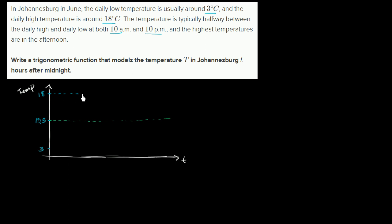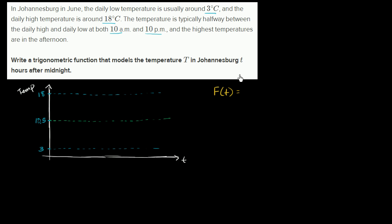The daily high is around 18 degrees Celsius and the daily low is around 3 degrees Celsius. We're going to oscillate around this midline, hitting the lows and the highs. To simplify things, because we hit 10.5 degrees at 10 a.m. and 10 p.m., I'm going to define a new function f of t, which is equal to the temperature in Johannesburg t hours after 10 a.m.